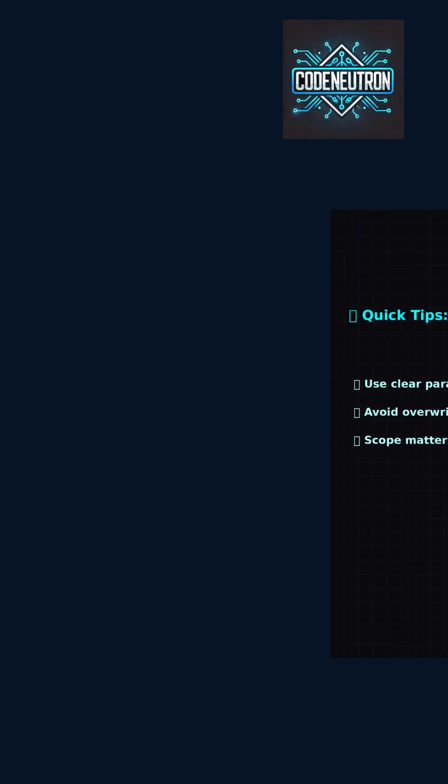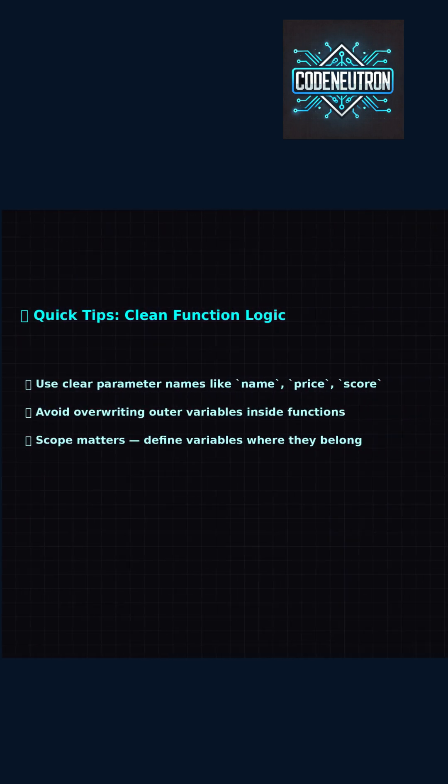Use clear parameter names, like name, price, or score. Don't override outer variables inside your function. And remember, scope matters — define things where they belong.